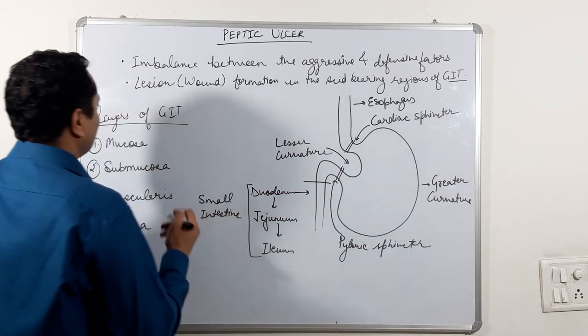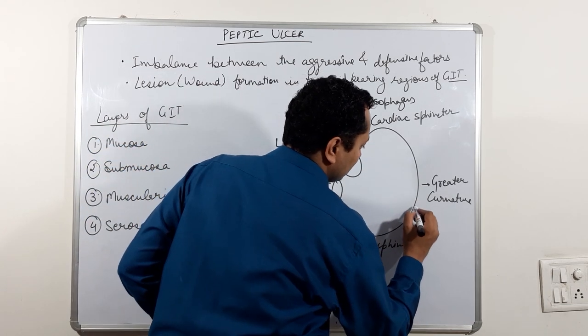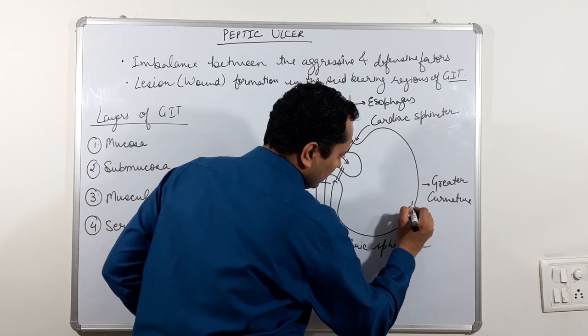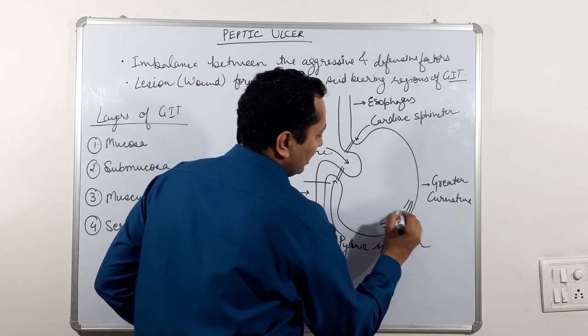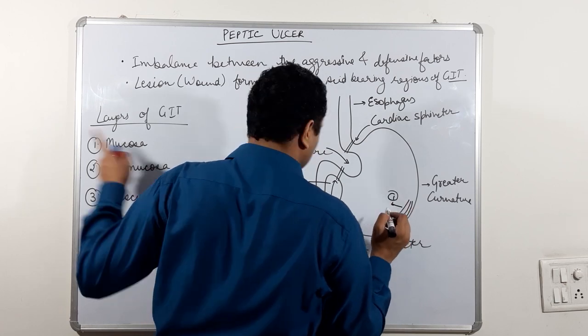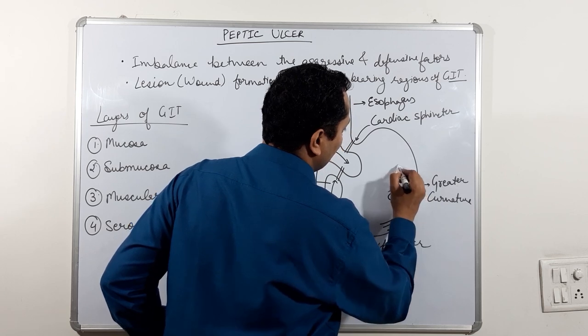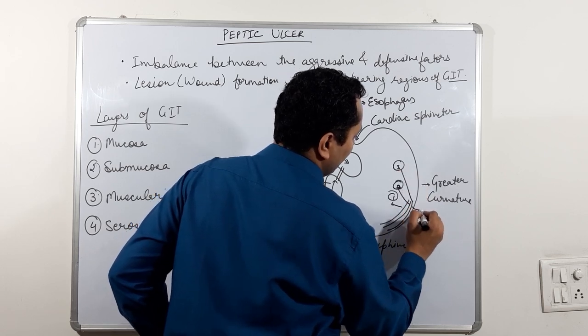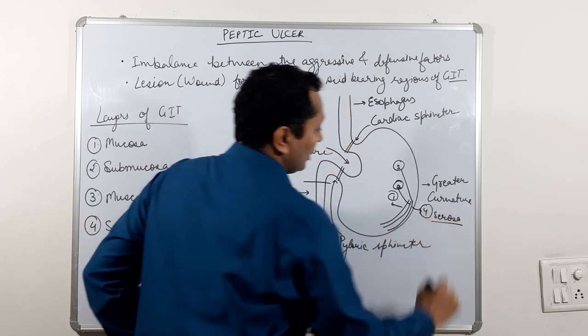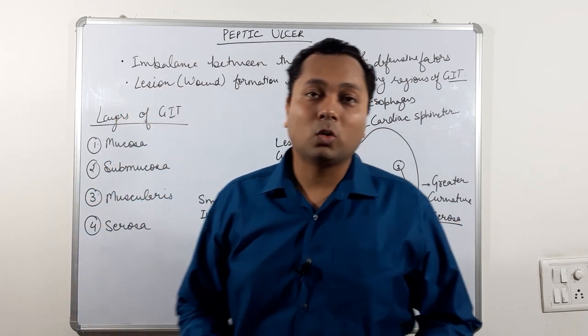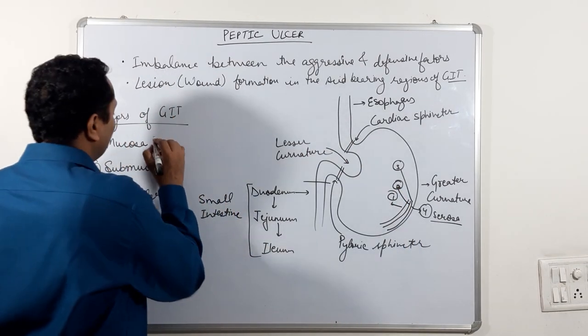This stomach has four layers. Starting from this, layer one is mucosa, then we have submucosa, then we have muscularis and then we have fourth layer as serosa. We are having these four layers: mucosa, submucosa, muscularis and serosa.